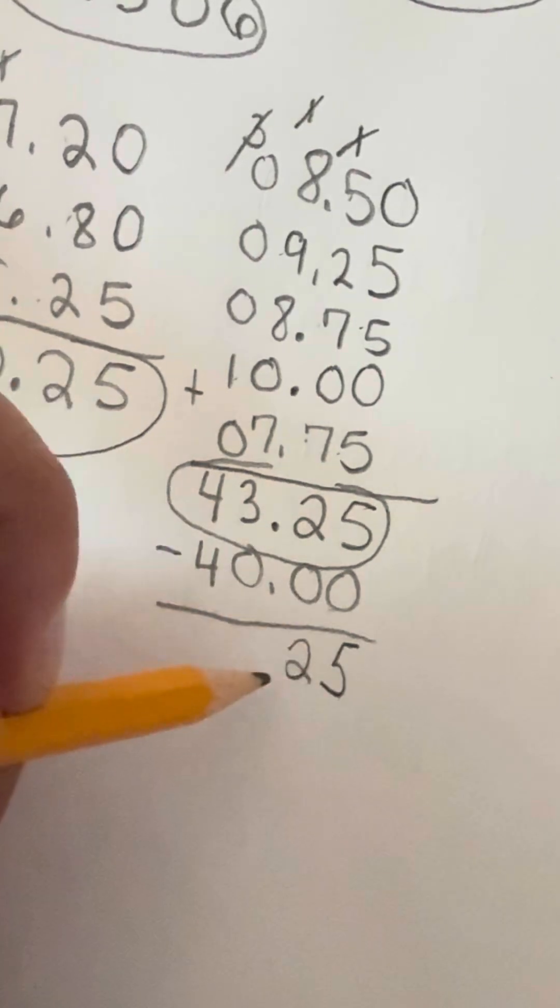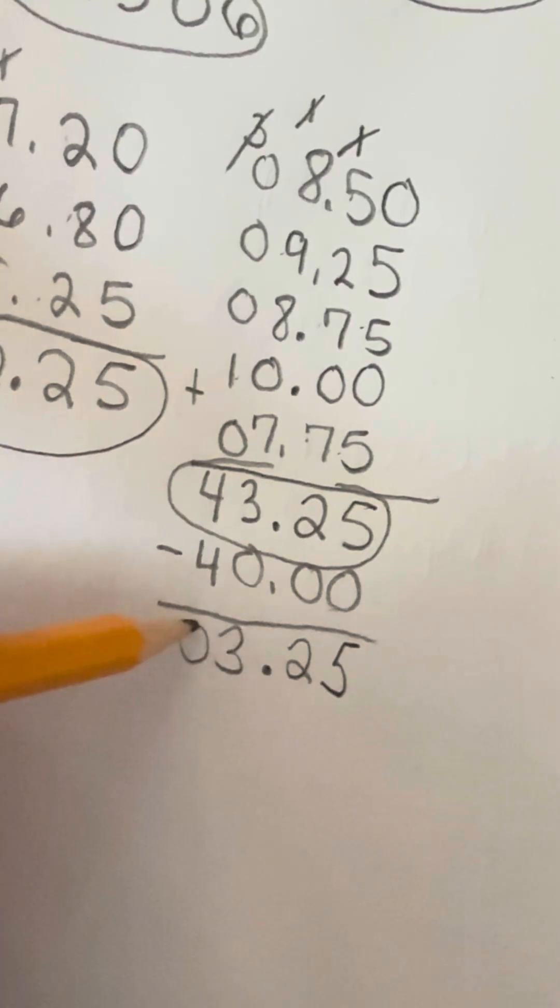And this is going to be 5 minus 0 is 5. 2 minus 0 is 2. Decimal is going to go right here. 3 minus 0 is 3. 4 minus 4 is 0.